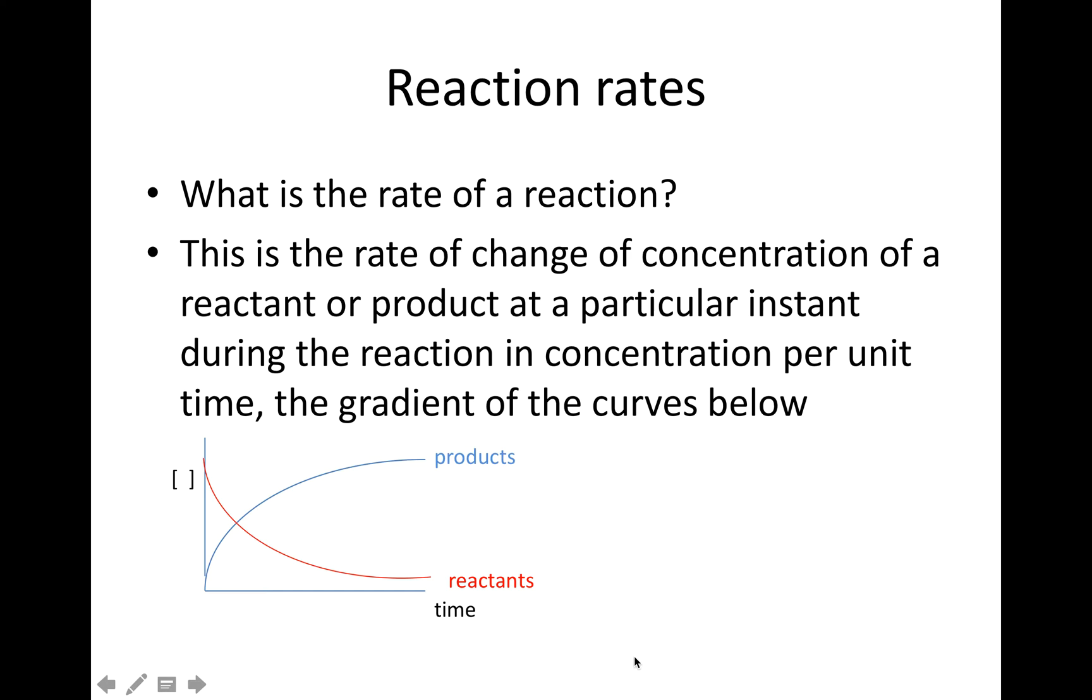For the issue of reactants, you follow the red curve. So the gradient anywhere of this red curve represents the rate of reaction as far as reactants are concerned.